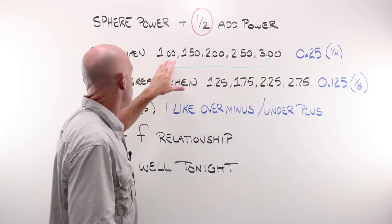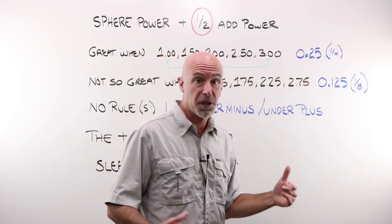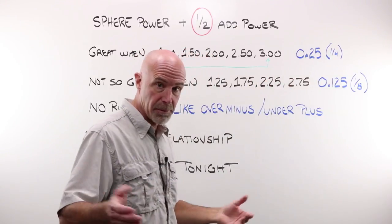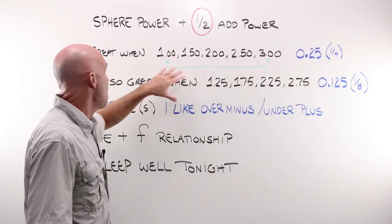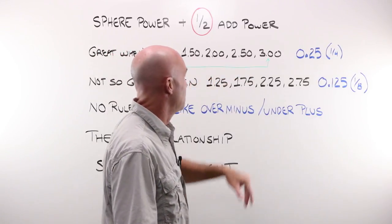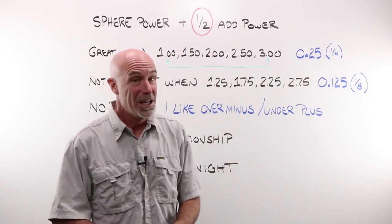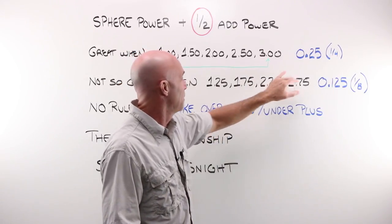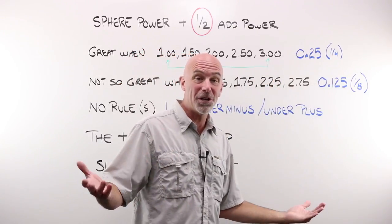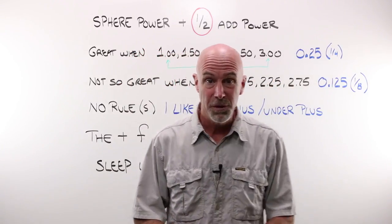The normal range for add powers run from +1 to +3 in quarter diopter steps. If I'm taking half of 1, 2, 2.50, or 3, well that's great because when you take your calculator and divide those by two you end up at a nice quarter diopter step which is what we're familiar with.